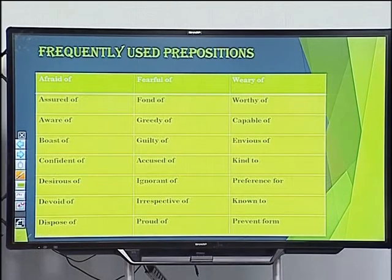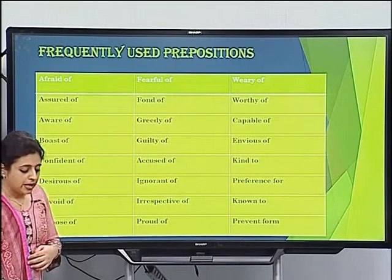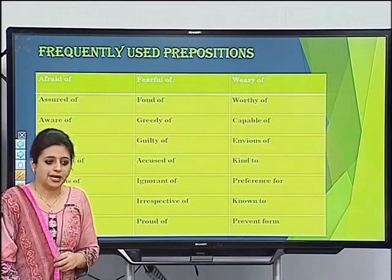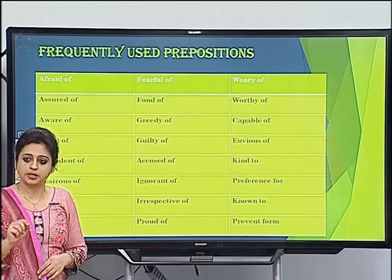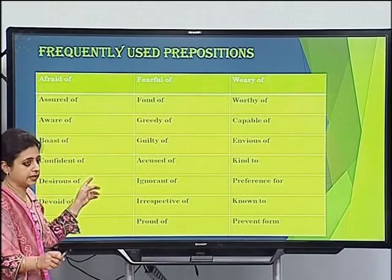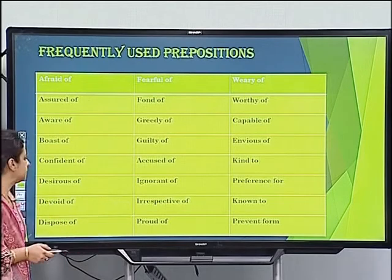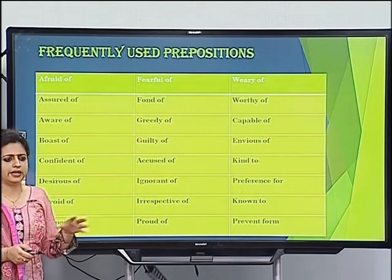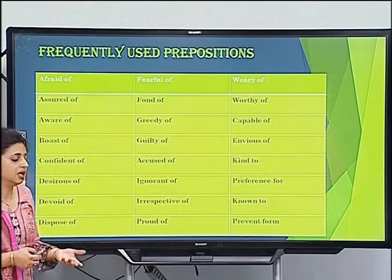A recap of 'of' prepositions: afraid of, assured of, aware of, boast of, confident of, desirous of, devoid of, dispose of, fearful of, fond of, guilty of, accused of — for example, he was accused of murder, not 'accused with.' Ignorant of — she was ignorant of her mistake, meaning she didn't even know about her error.